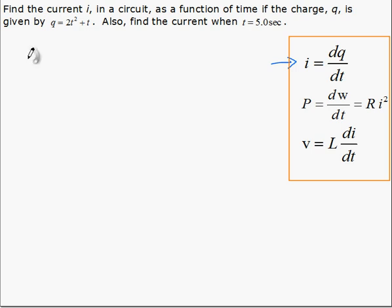i is equal to the derivative of q, which is 4t plus 1. So, there's an expression for current as a function of time. Simply the derivative.